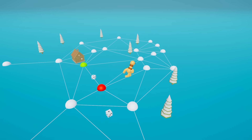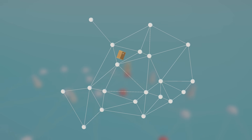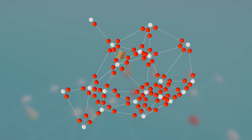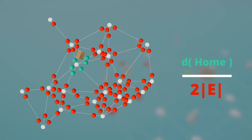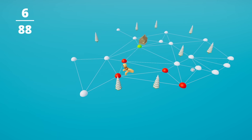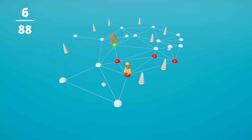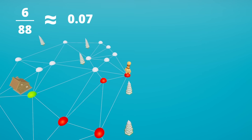We can calculate the probability of landing on a node. Each turn we will be travelling through an edge to a node, so the total number of outcomes is 2 times the total number of edges. The favorable ones are those that land on our home node — so the degree of our home node. In the example graph displayed here, the degree of home is 6 while there are 44 edges, so the steady state fraction is 6 over 88, approximately 7%.